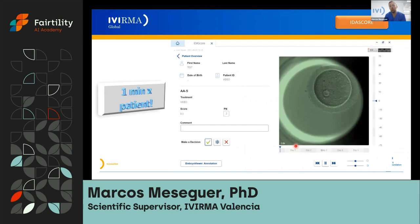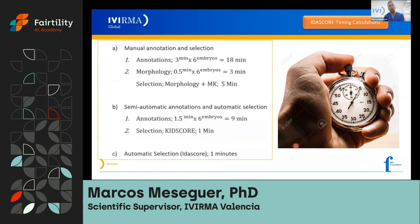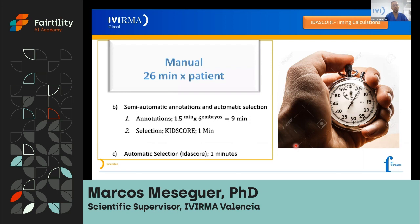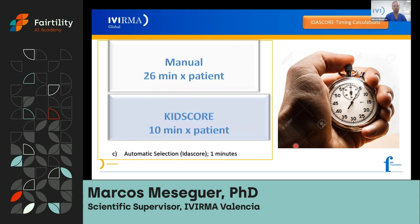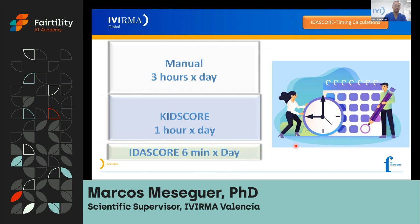It's a very quick process for evaluation. I did some calculations about the time needed for manual annotations and selection: annotations of events, then morphology, then selection — around 26 minutes per patient to evaluate everything by time-lapse. If you use a semi-automatic system like the KidsCore score, that reduces to around 10 minutes per patient. But if you use a fully automatic system like the IDA score, you need just one minute per patient. The time saving is really outstanding. In a clinic like ours with six patients per day for embryo selection, that translates to three hours with classical annotation, one hour with KidsCore, and only six minutes per day using IDA score.